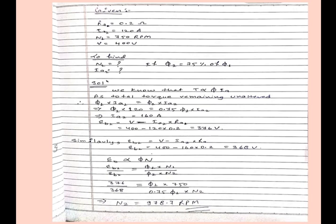Also we know that back EMF is directly proportional to flux and the RPM of the motor. So from this we can create this equation: Eb1 by Eb2 equals phi1 into N1 over phi2 into N2. By putting all the values of Eb1, Eb2, phi1, phi2, and N1, we can get N2 and it is 978.7 RPM. This will be our answer.